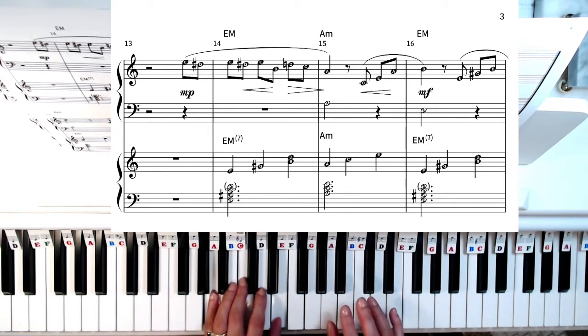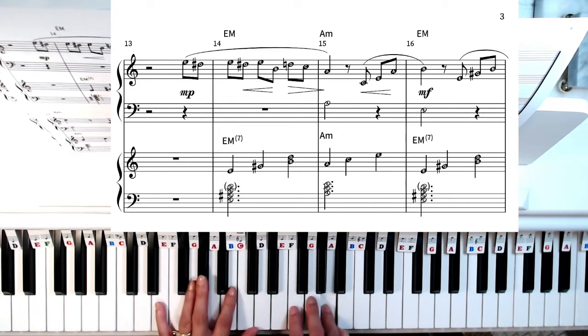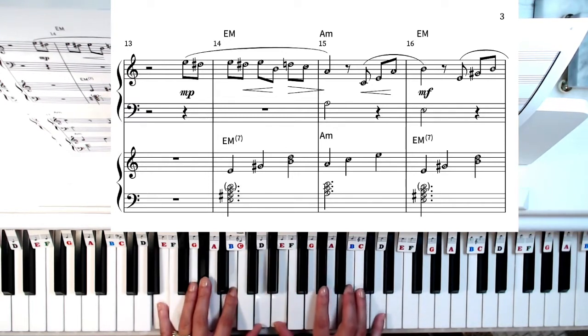To A minor, so A, C, and E. That's the chord. Fill in the melody. E major, E, G sharp, B, and D. Fill in the melody.